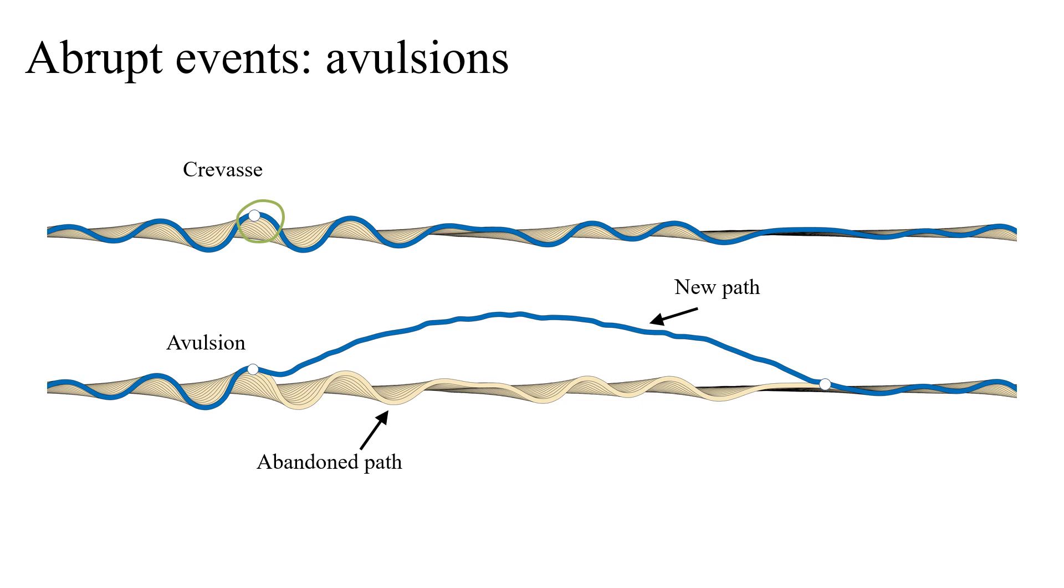In our system, an avulsion may be triggered stochastically at the location of a crevasse. We then compute a new path that connects further downstream procedurally, starting in the direction of the tangent to the curve.